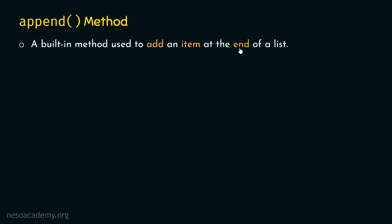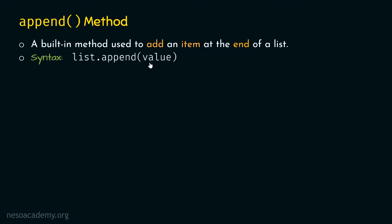Let's see the syntax of the append method. We first need to provide the name of the list where we want to add an item, then specify dot and append method. To the append method, we need to provide the value — the value which we want to add to the list.